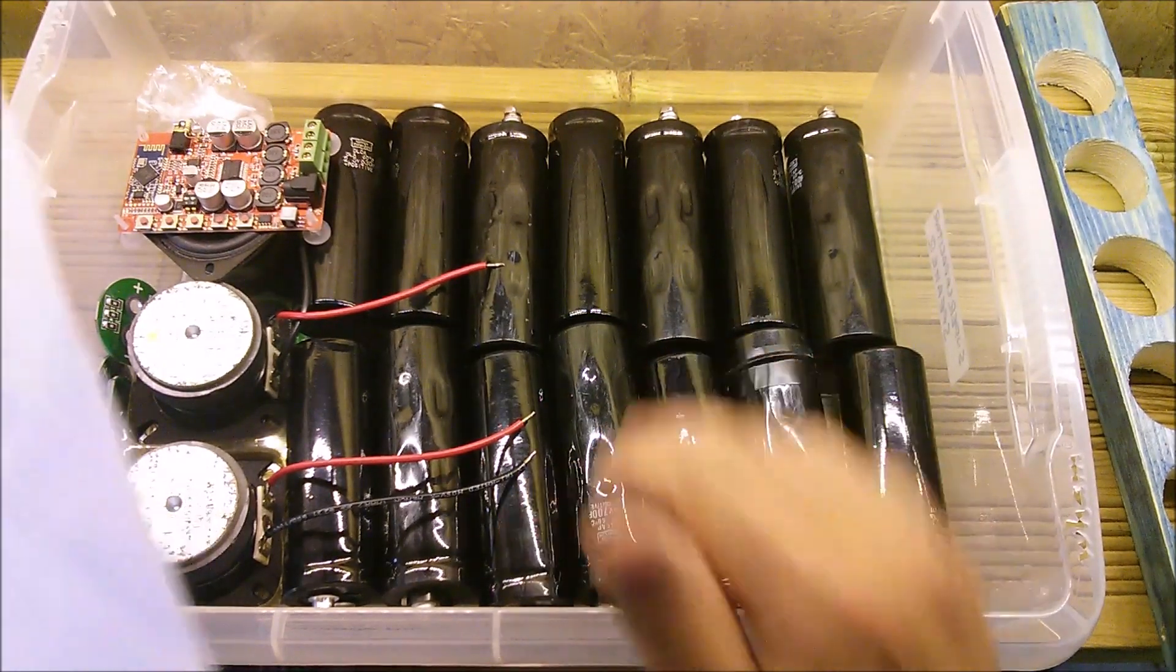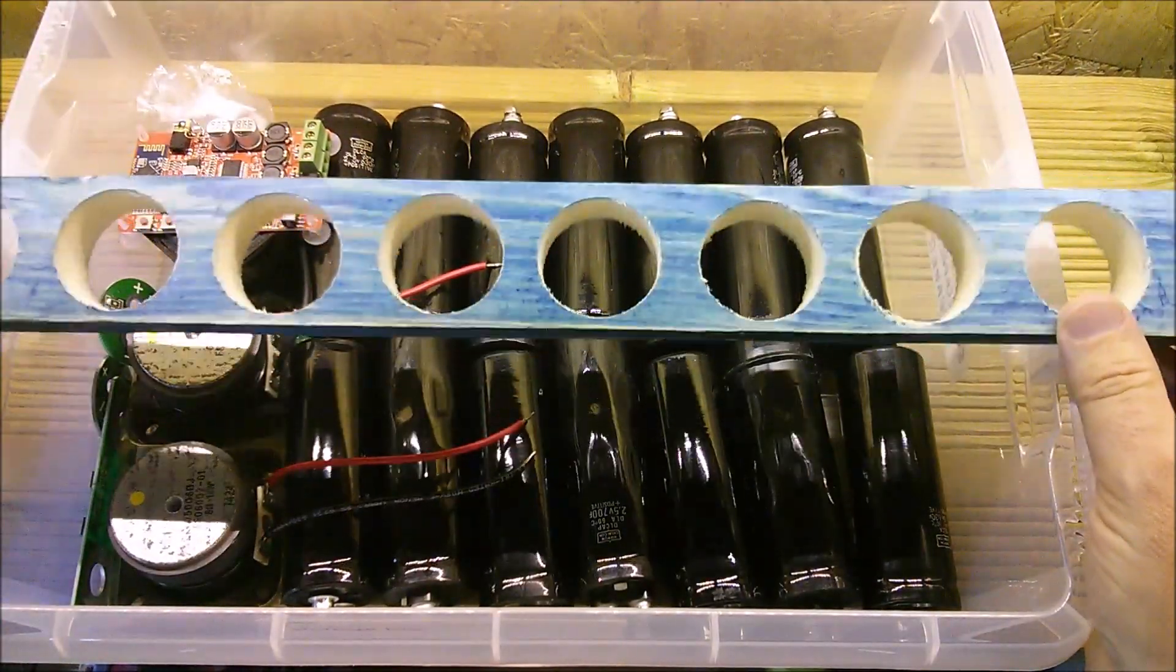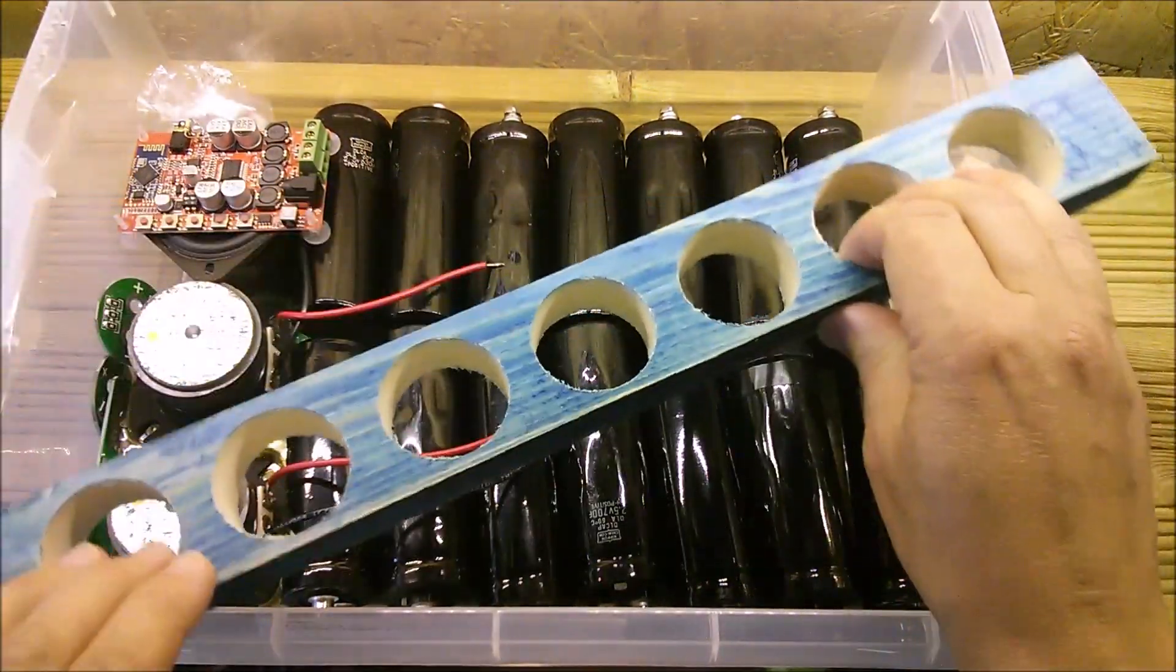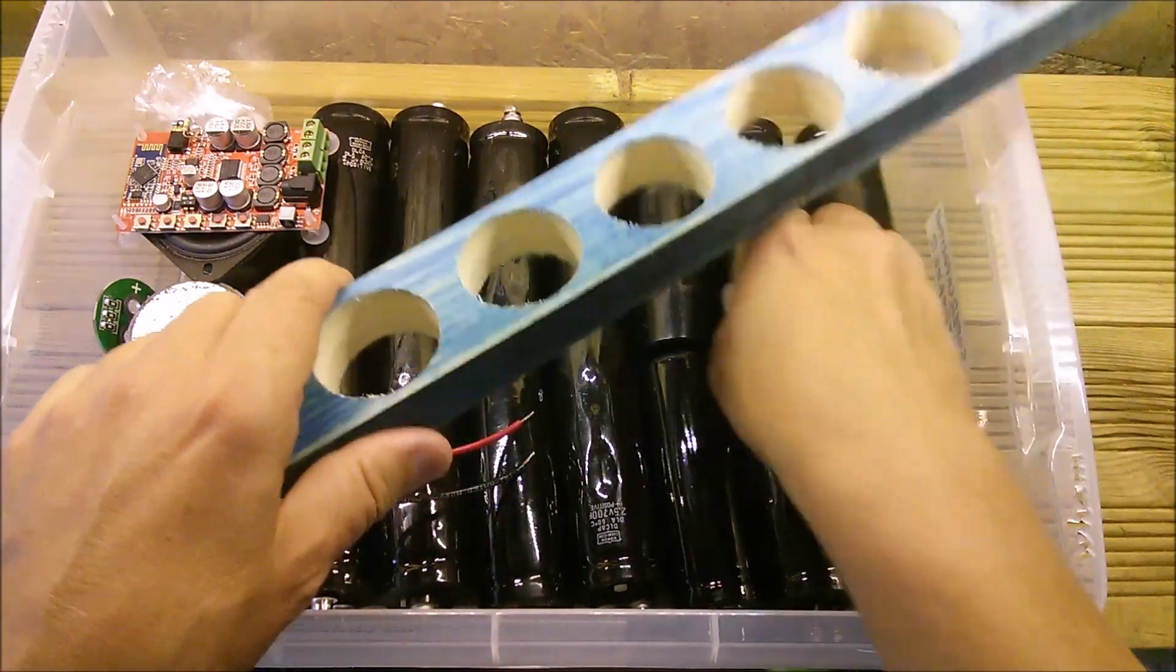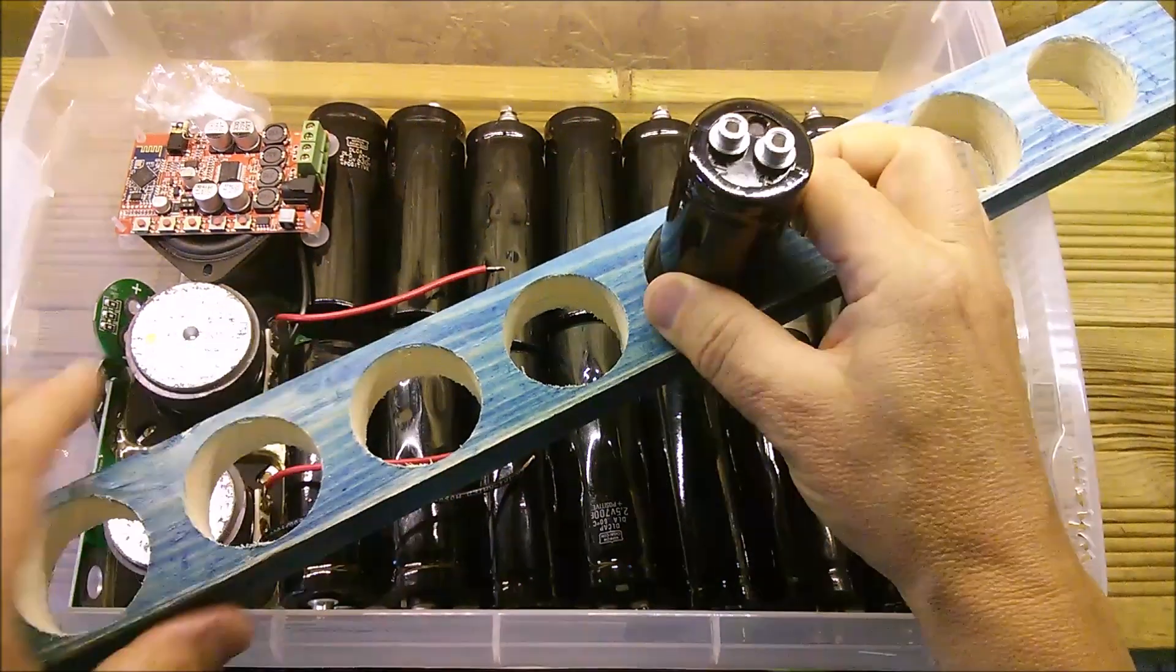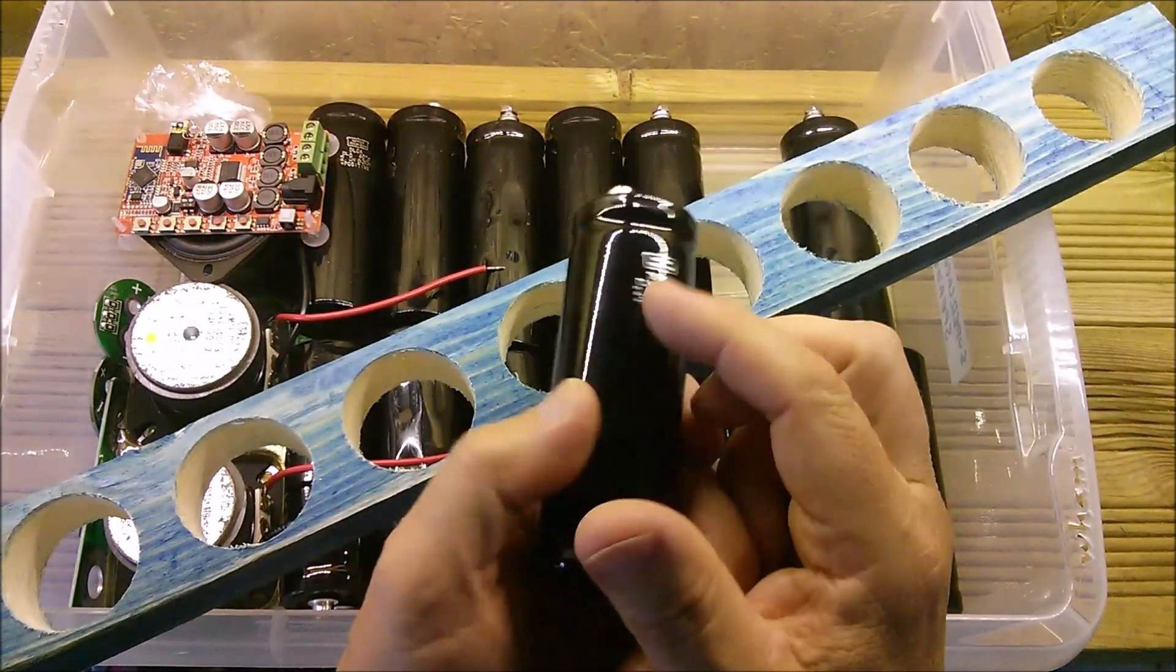To get the caps all set up, I made this - cut eight holes in this piece of wood. They're a little bit oversized, but the idea was to put these in there and wedge them in somehow. But there seems to be a problem with the 630 farad super caps.